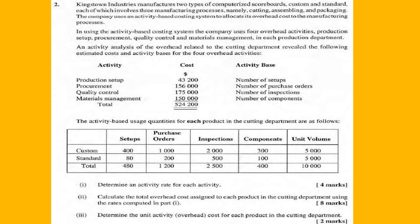The first thing we'll do is read what is required. There are three parts to the question. The first part is to determine an activity rate for each activity, so it's an ABC costing question. The second part is to calculate the total overhead cost assigned to each product in the cotton department using the rates computed in part one.